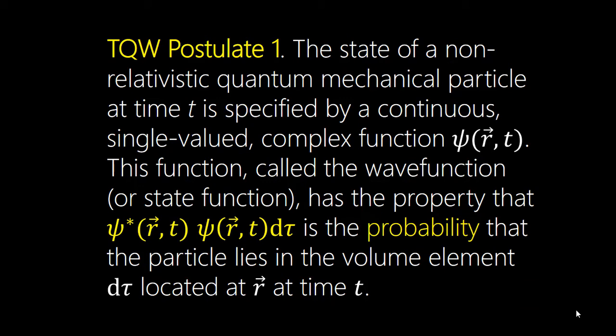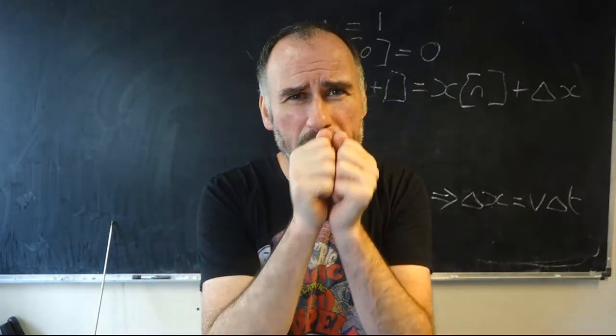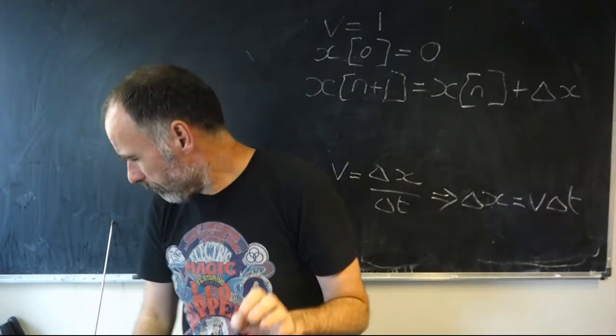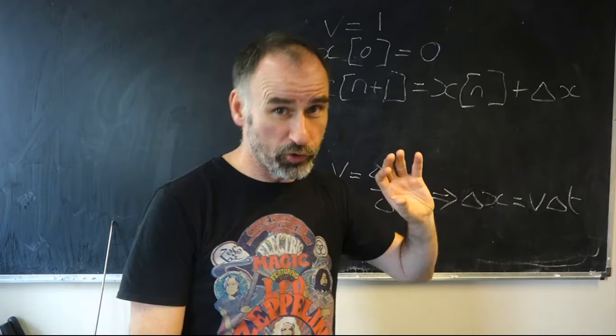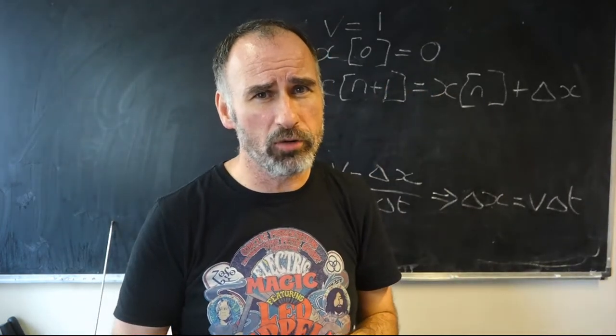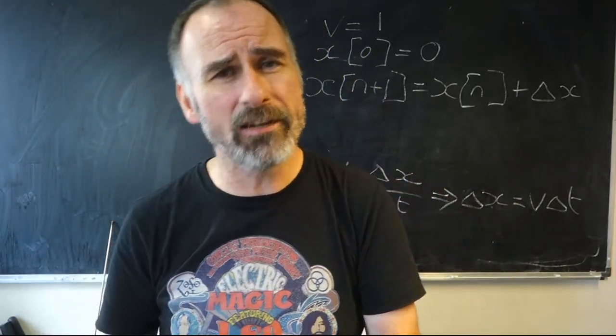The state of a non-relativistic quantum mechanical particle at time T is specified by a continuous, single-valued, complex function psi. This function, called the wave function or state function, has the property that the complex conjugate of psi multiplied by psi d-tau is the probability that the particle lies in the volume element d-tau located at position vector r at time T. Lots of words — but you have come across these concepts before. One thing I want to really focus on right now is the complex aspect of this. Why complex? Why are complex numbers embedded deep in the heart of quantum mechanics?